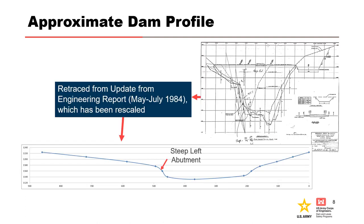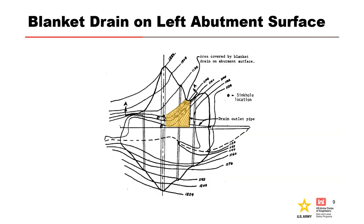The dam profile is shown in the top right figure. This dam profile was re-plotted on a one-to-one scale as shown in the bottom figure. The left abutment was steep with a slope approximately equal to one horizontal on one vertical. This figure also shows the location of a gravel blanket drain that was placed over the left downstream abutment rock. The drain started about 20 feet downstream of the dam centerline and extends 210 feet to 12-inch drain pipes.